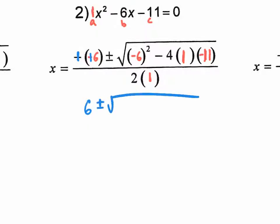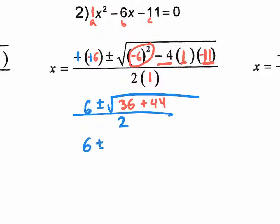Plus or minus the square root of — now on the inside of the square root, the discriminant value is very important. When you do negative six squared, that's positive thirty-six, and negative four times one times negative eleven is positive forty-four. It's all divided by two a, which is two times one, which is just two. So what is thirty-six plus forty-four? That's eighty. So what we have is six plus or minus the square root of eighty divided by two.